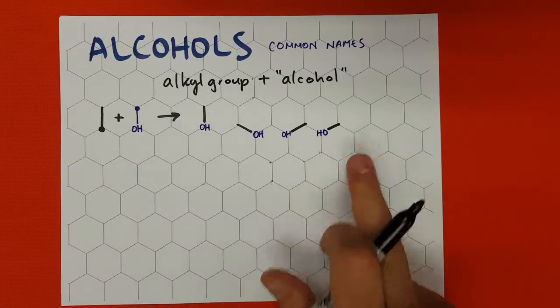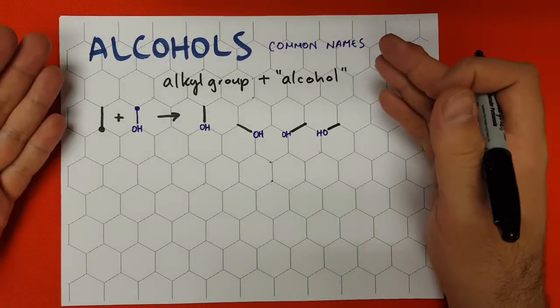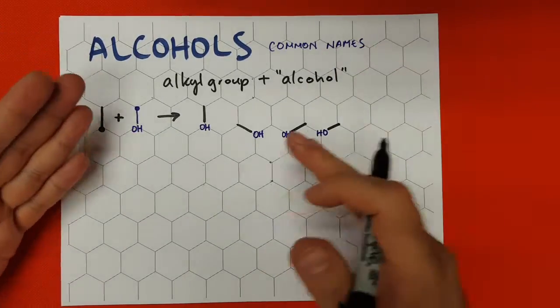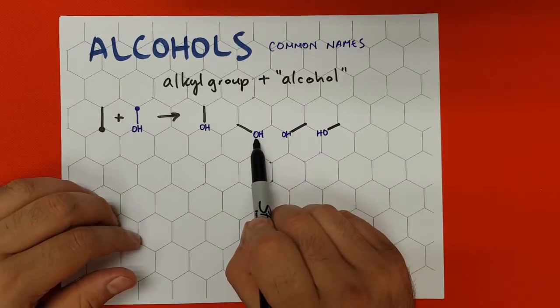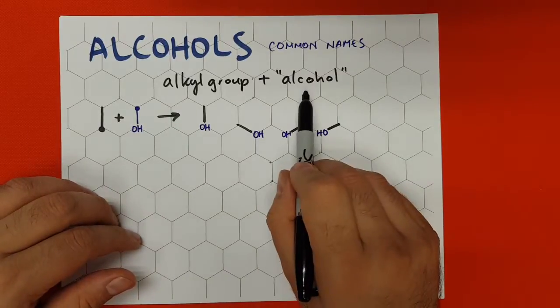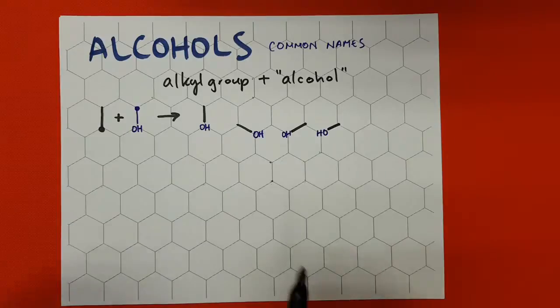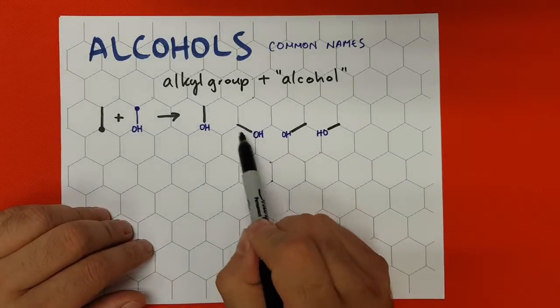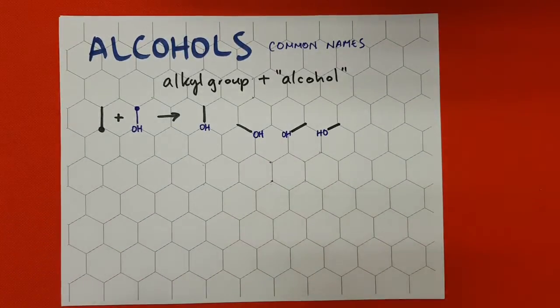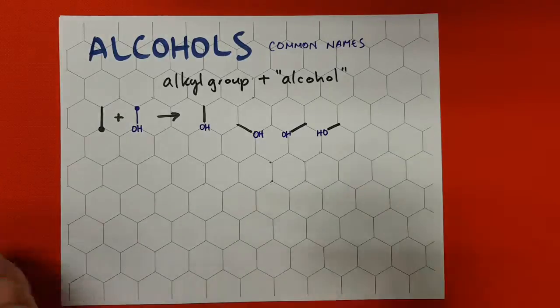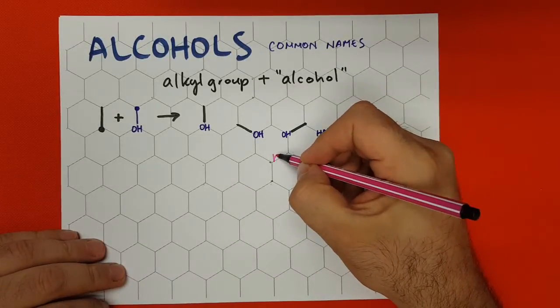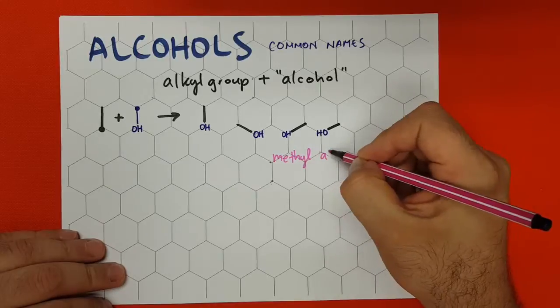But everything is the same. So here we analyze and we look at the structure and we say there's OH, hydroxy group. Hydroxy group is going to turn into the word alcohol, and what do we have attached to this hydroxy group? Very simple, methyl. So in this case we have methyl alcohol.